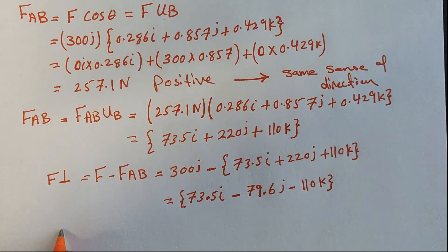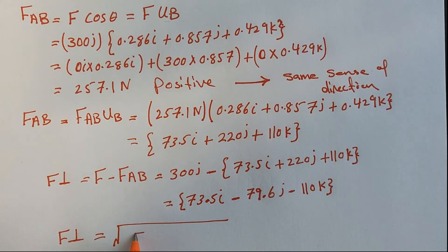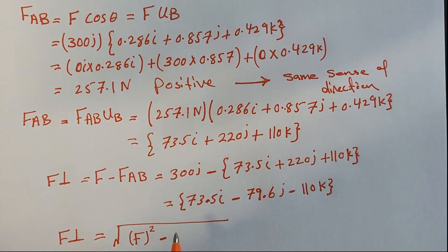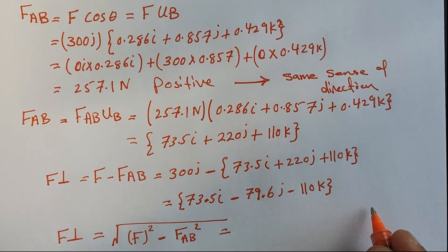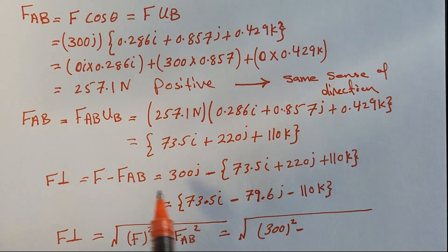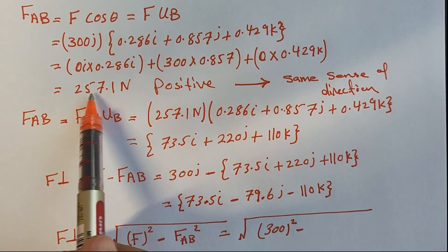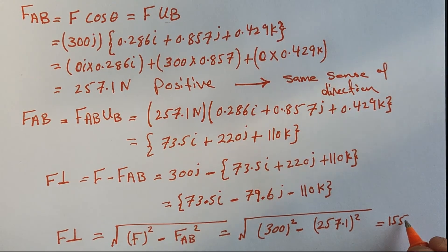To find the magnitude of the perpendicular force, we take the square root of F² minus F_AB²: √(300² - 257.1²) = √(90000 - 66100.41) = 155 Newtons.